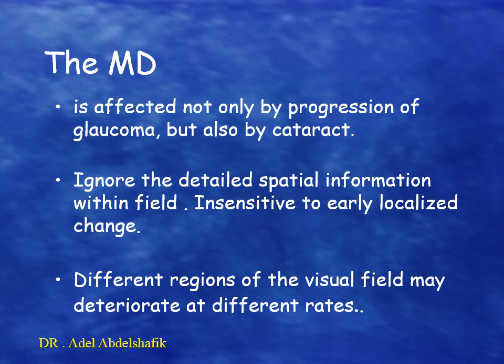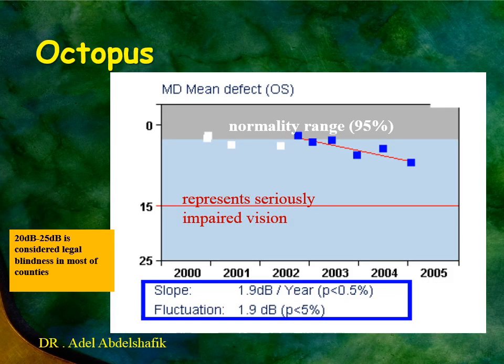A problem with mean deviation is that it is not only affected by glaucoma but also can be affected by cataract. Additionally, mean deviation ignores detailed spatial information of the field and is insensitive to early localized changes. Different regions of the visual field may deteriorate at different rates, so event analysis can show localized changes earlier while trend analysis needs longer time and ignores localized changes.